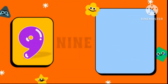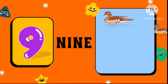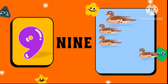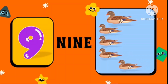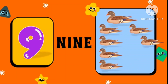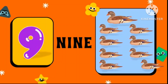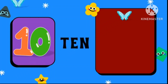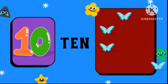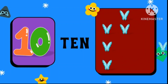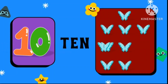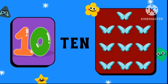Number 9, N-I-N-E. 1, 2, 3, 4, 5, 6, 7, 8, 9 — 9 ducks. Number 10, T-E-N. Let's count: 1, 2, 3, 4, 5, 6, 7, 8, 9, 10 — 10 butterflies.